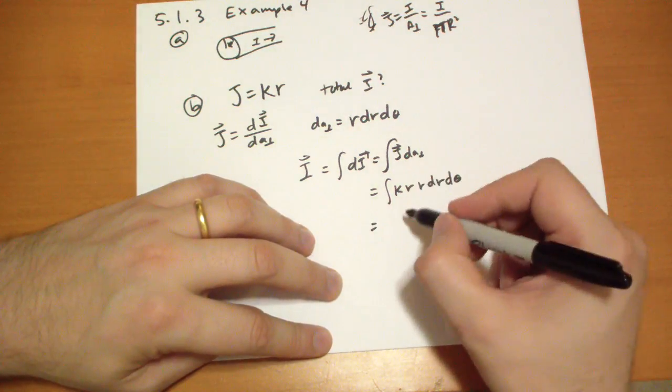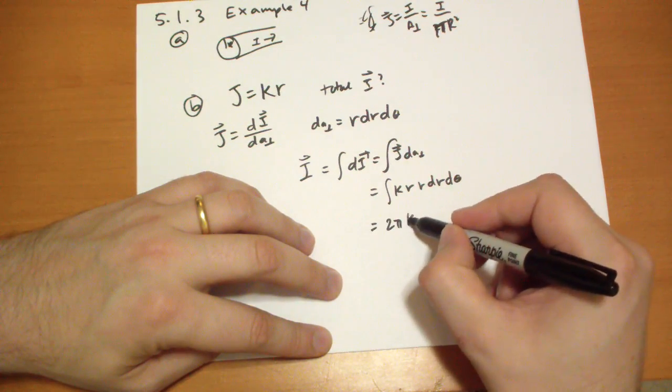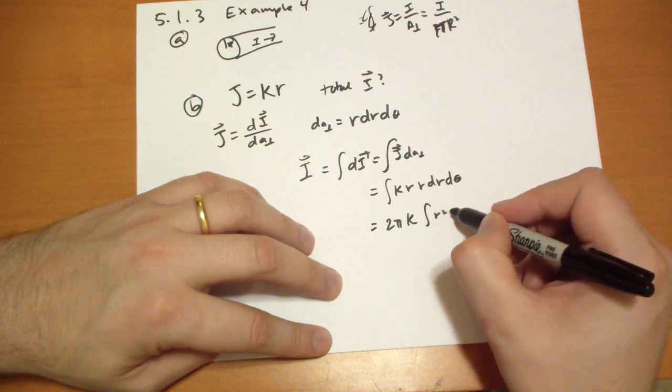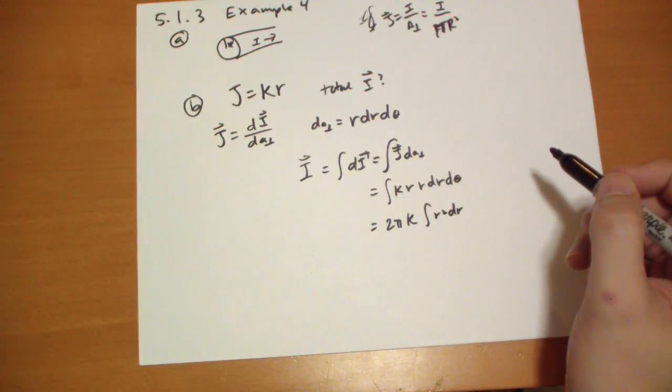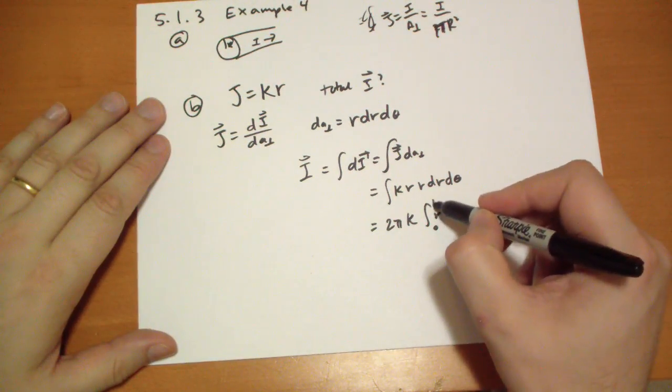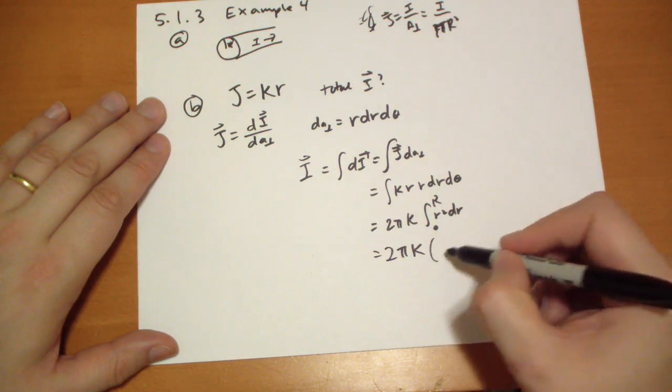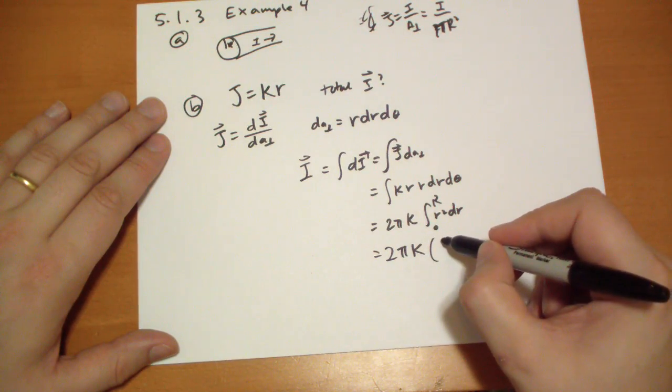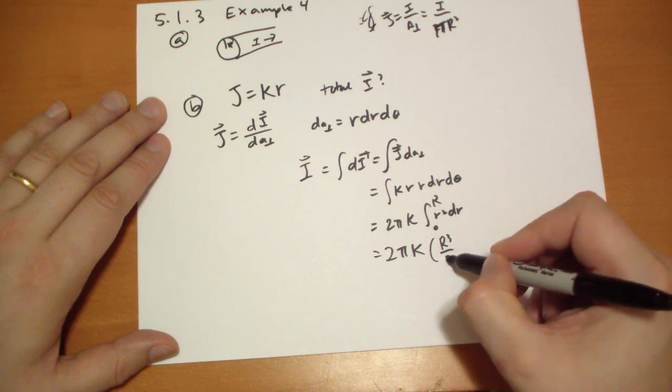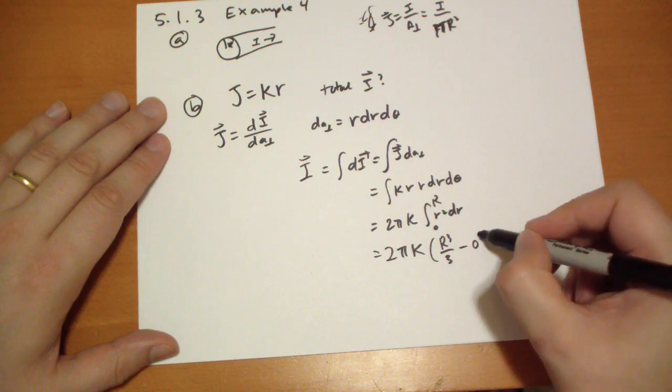Theta goes from 0 to 2π, so we have 2π from the theta part. We have a K that can come out, and then we have integral R squared dR, from 0 to R. So that's a rather easy integral to solve. That would be R cubed over 3. So R cubed over 3, minus 0. OK,